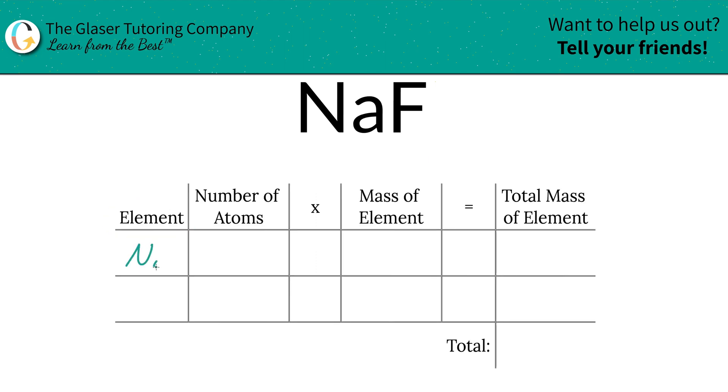So the first step is to write the elements we see in the compounds. So we've got sodium, Na, and we've got fluorine. Next is to identify the number of atoms. That's where the subscripts come into play. Now if you don't see a subscript, just put a 1 because that's what it is assumed to be. So we've got 1 sodium, 1 fluorine.